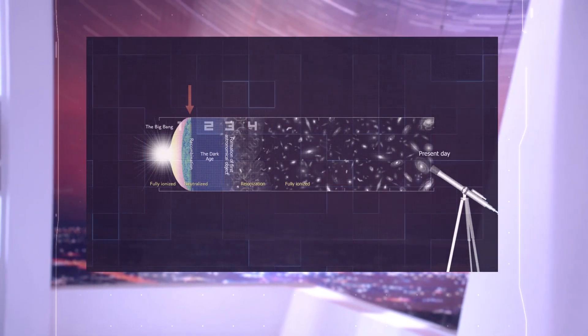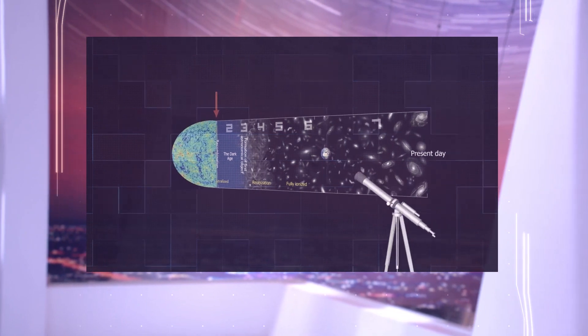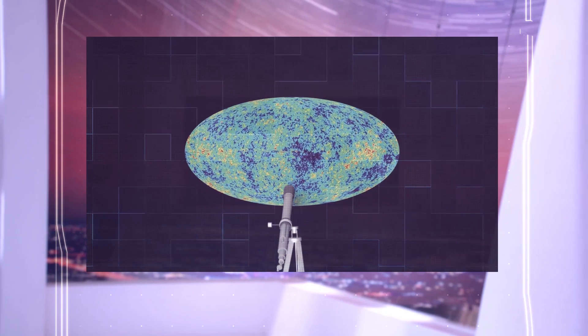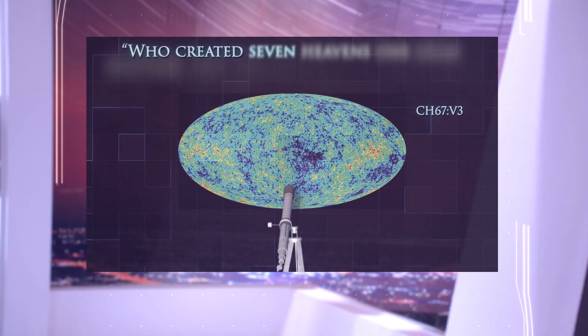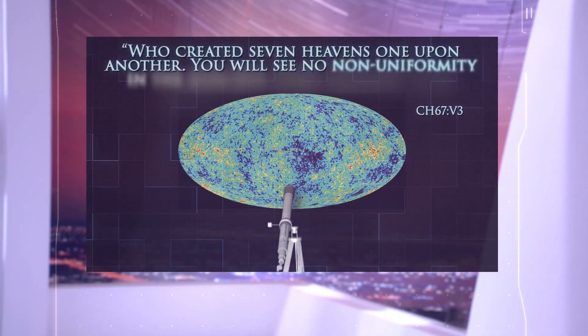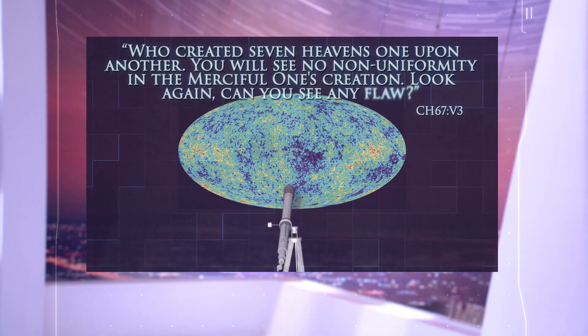Interestingly enough, the Holy Quran also references what modern physicists now refer to as the cosmological principle — the notion that the spatial distribution of matter in the universe is homogeneous and isotropic when viewed on a large enough scale. In simpler terms, this principle tells us that the universe is uniform. Thanks to today's telescopes we can now observe the uniformity of the universe by looking out and back in time through the different space eras. The Holy Quran told us 1400 years ago that we can observe this uniformity by doing the same exercise of looking through space eras, when it stated: 'Who created seven heavens one upon another? You will see no non-uniformity in the merciful one's creation. Look again, can you see any flaw?'